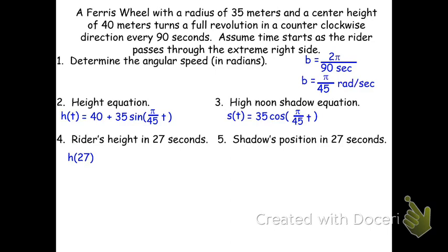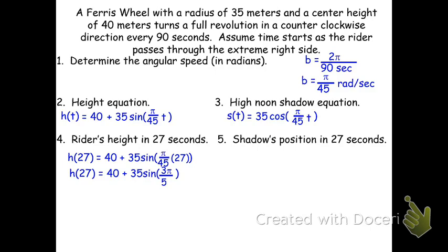For the rider's height at 27 seconds, h(27) = 40 + 35·sin(π/45 × 27). Simplifying π·27/45 by dividing top and bottom by 9 gives 3π/5, so h(27) = 40 + 35·sin(3π/5). Switching the calculator to radian mode and typing 40 + 35·sin(3π/5) gives approximately 73.29 meters.